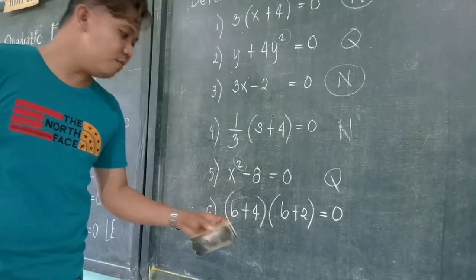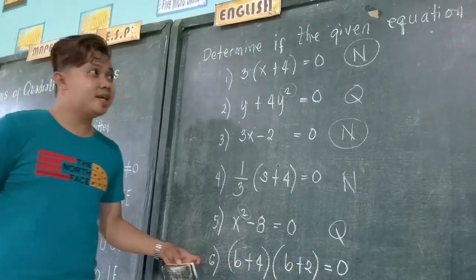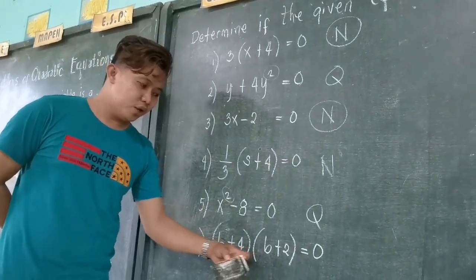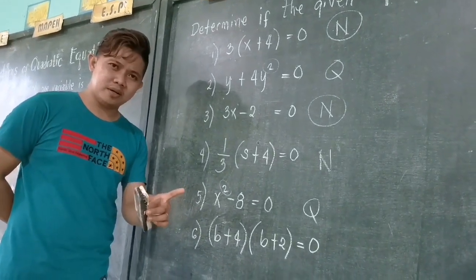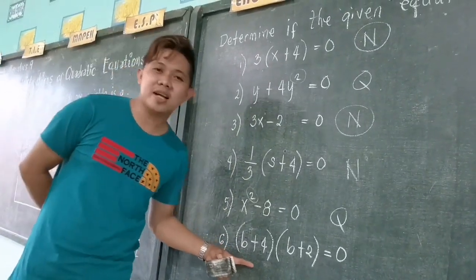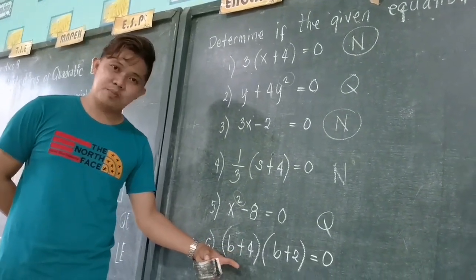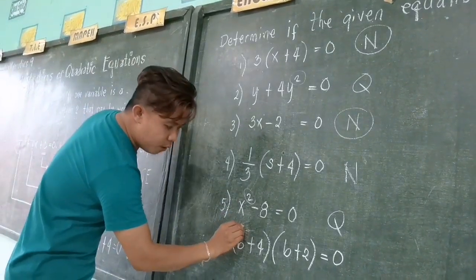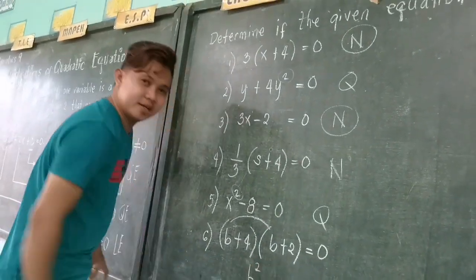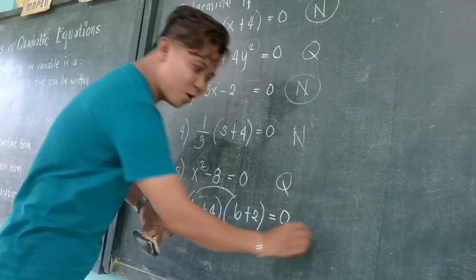Number 6: the product of (b plus 4) and (b plus 2) is equal to 0. Is this a quadratic equation or not? You might evaluate the degree as 1 since each factor is linear. However, as you can see, this is a factored form, so we are going to expand it. If we multiply b times b, we get b squared. Therefore, the degree of this equation is 2, so this is quadratic.